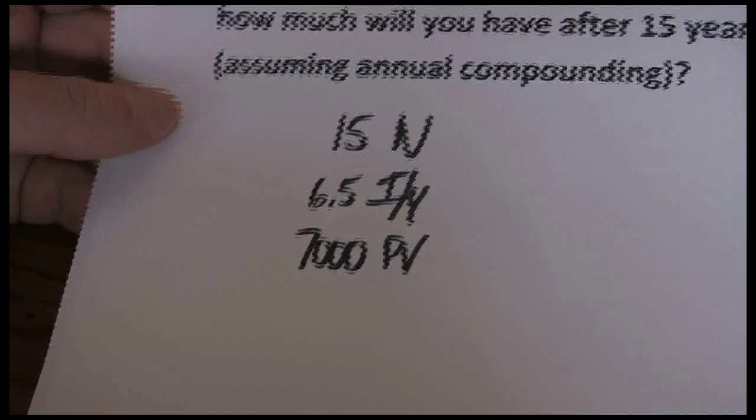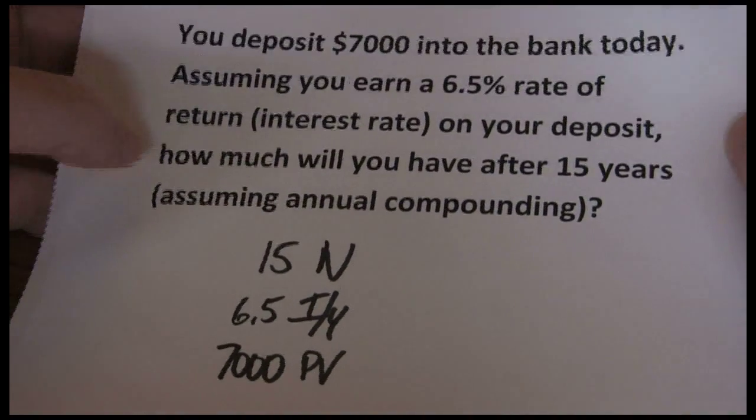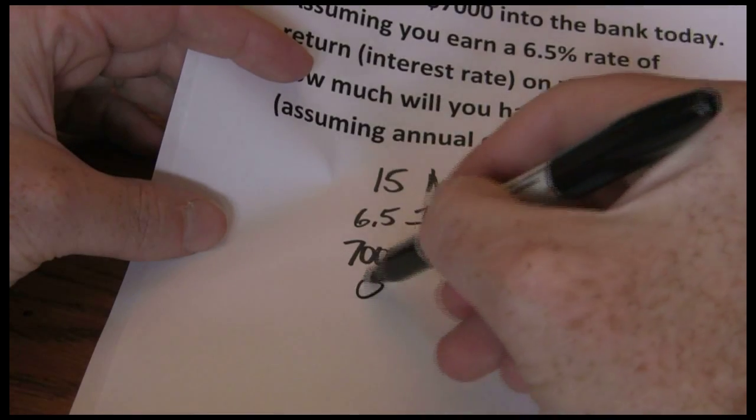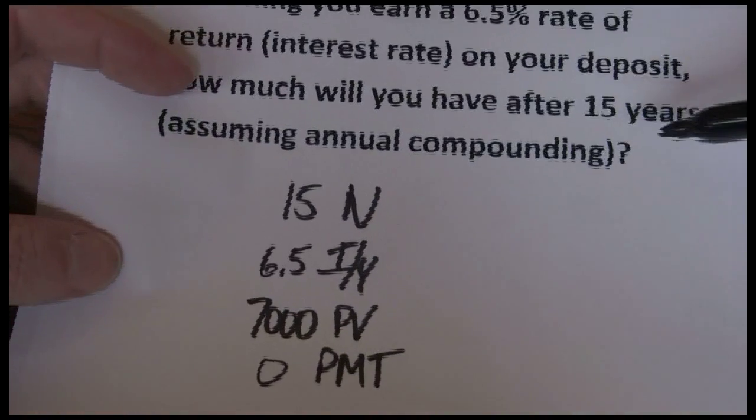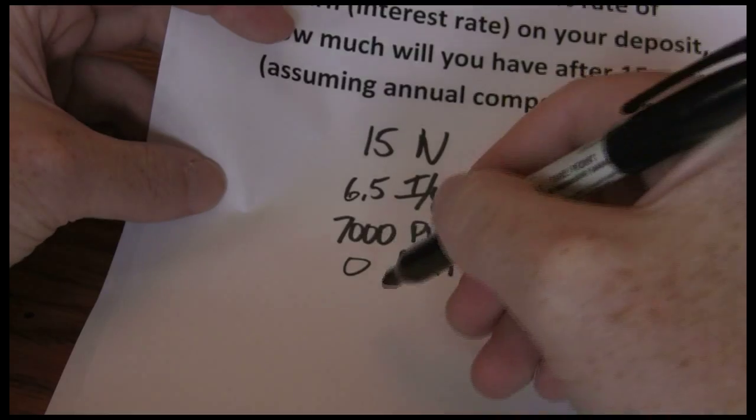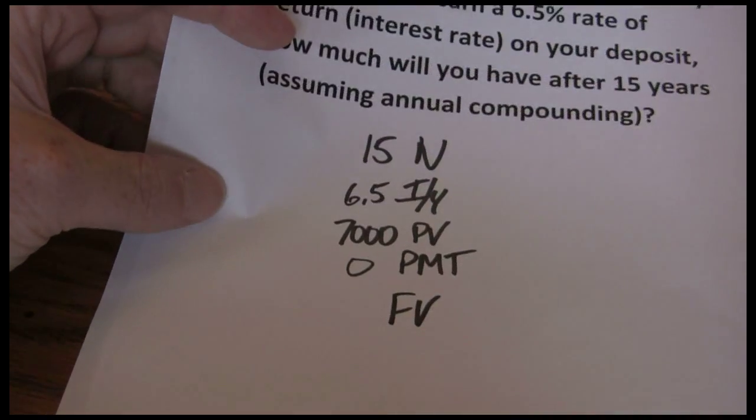Payment is an annuity stream. In this problem we do not have an annuity, so we just want to zero out that payment button. And lastly we said we were solving for value after 15 years, so we're solving for our future value.